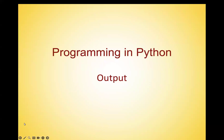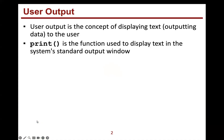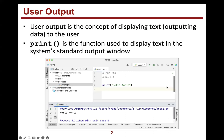This slide deck covers output. When we say output, what we're really referring to is user output — the concept of displaying text or outputting data to the user, to the actual user of our program, not just the coder. To do this, we use print. Print is a function used to display text in the system's standard output window. We are using an IDE, an integrated development environment named PyCharm.